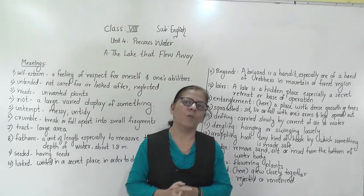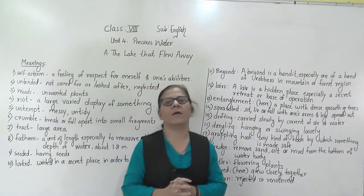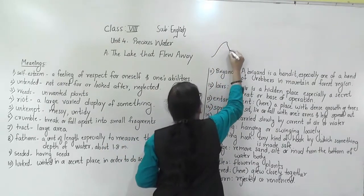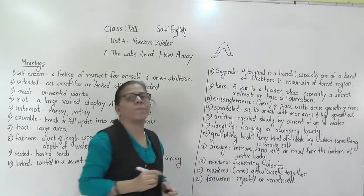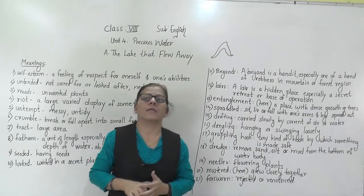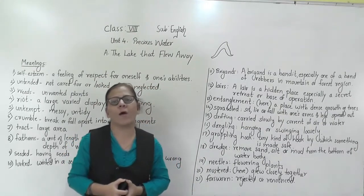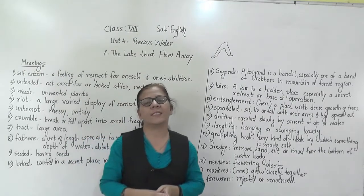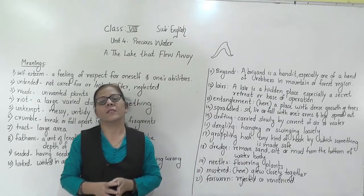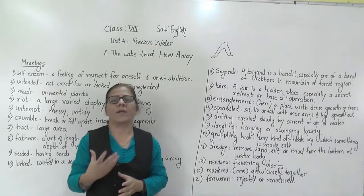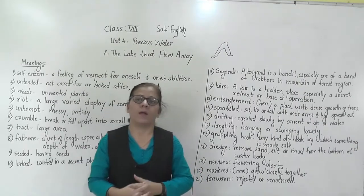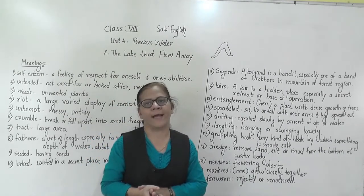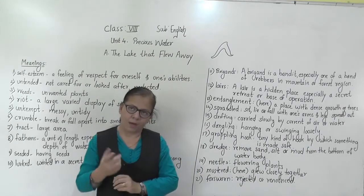Now, boomerang — what does boomerang mean? It is a curved-shape, flat piece of wood, which is to be thrown; specially it is used for hunting. Now, what is the similarity between these two quotes? The similarity is that whatever we do, we get back. The common link between these two quotes is: every action has a reaction, and what goes around comes back around eventually.